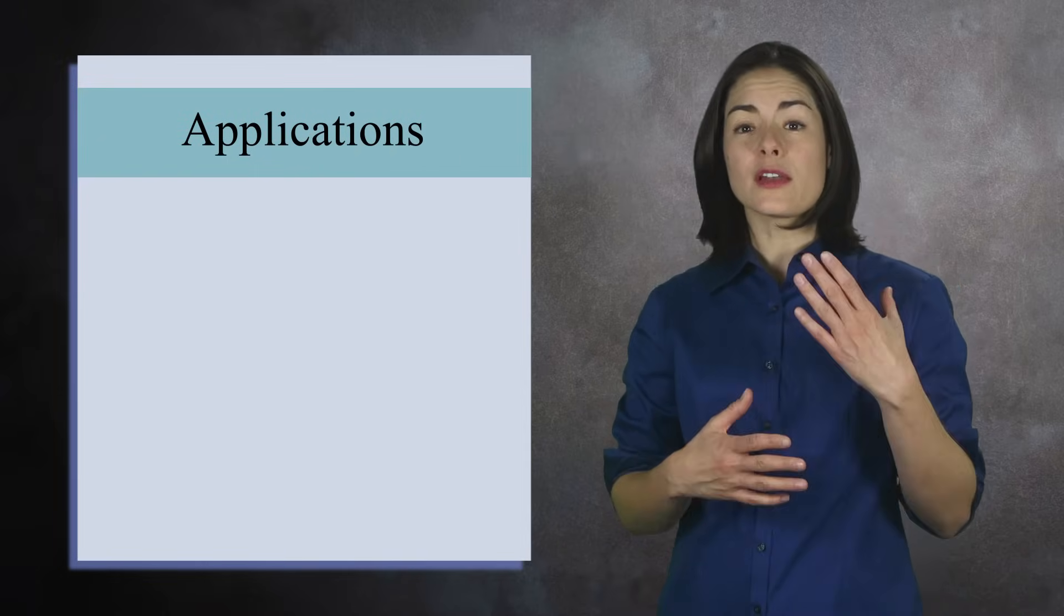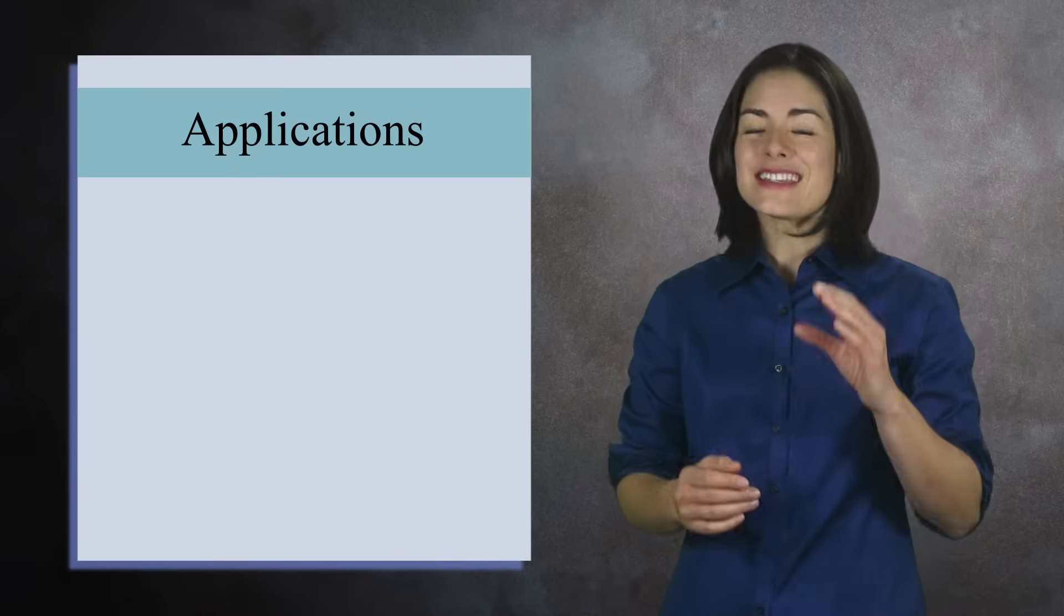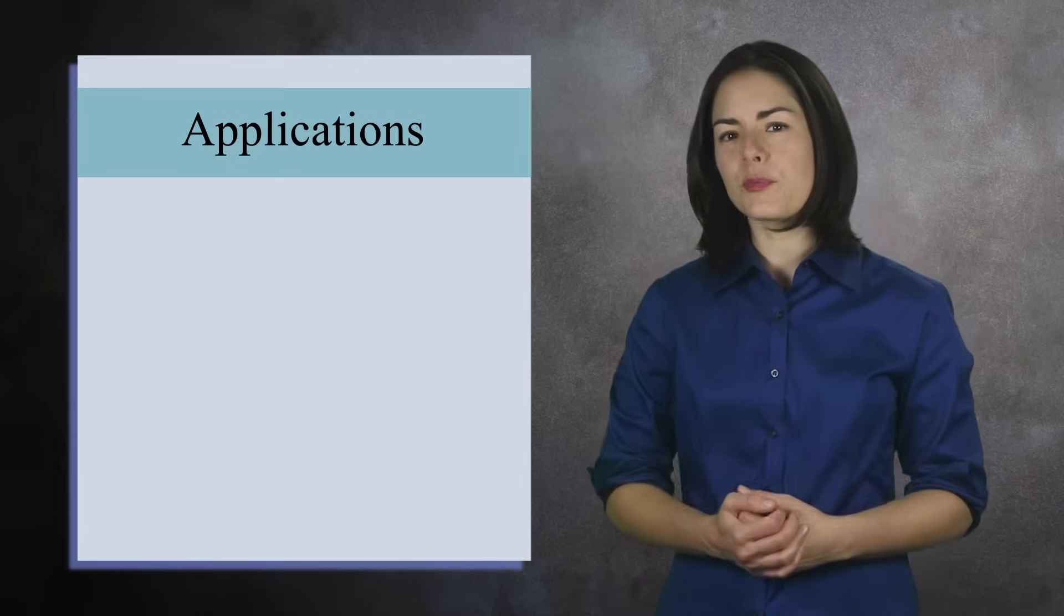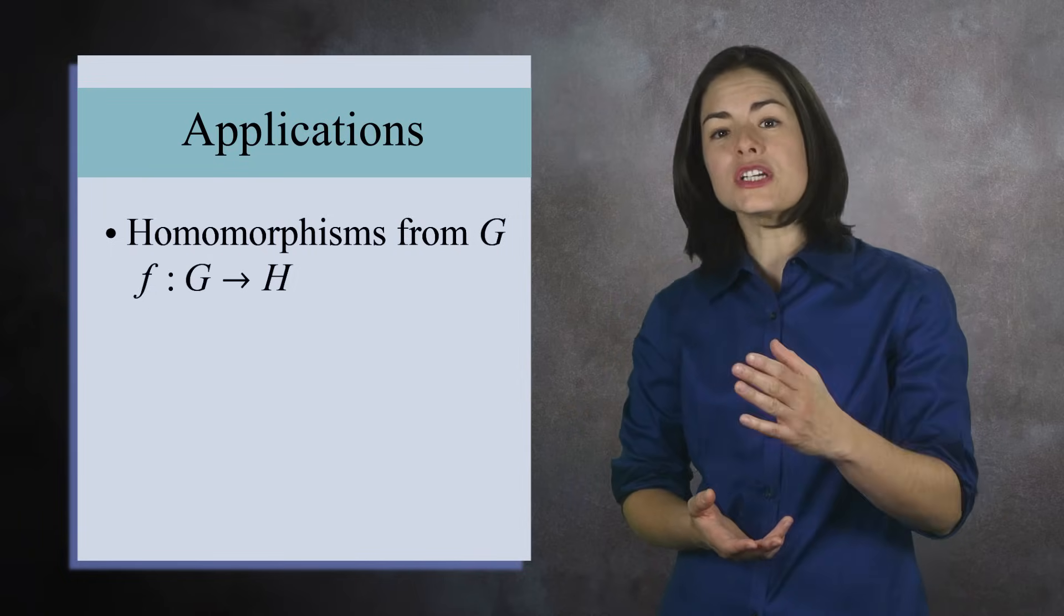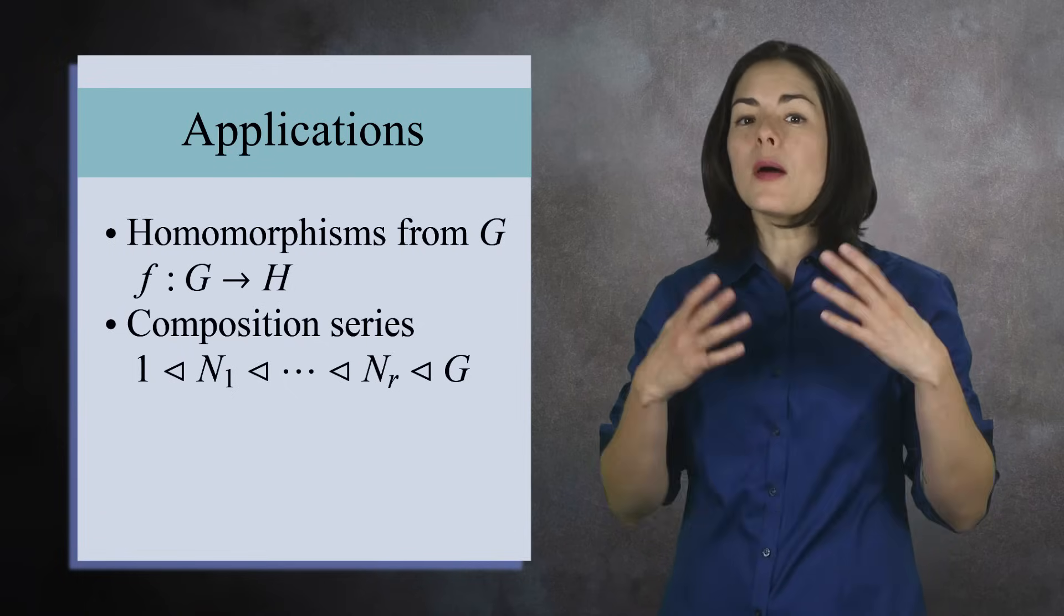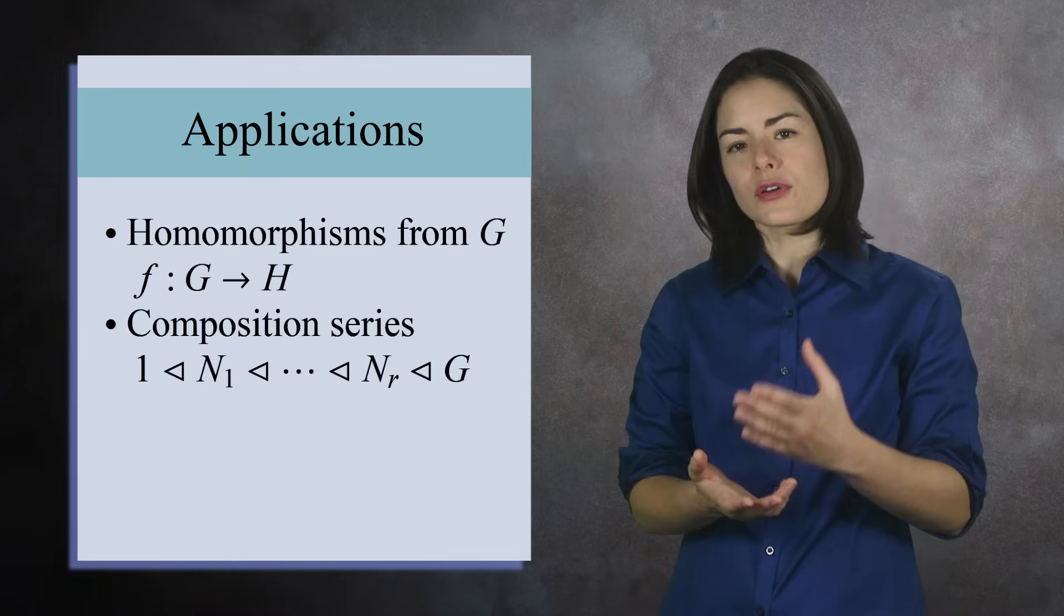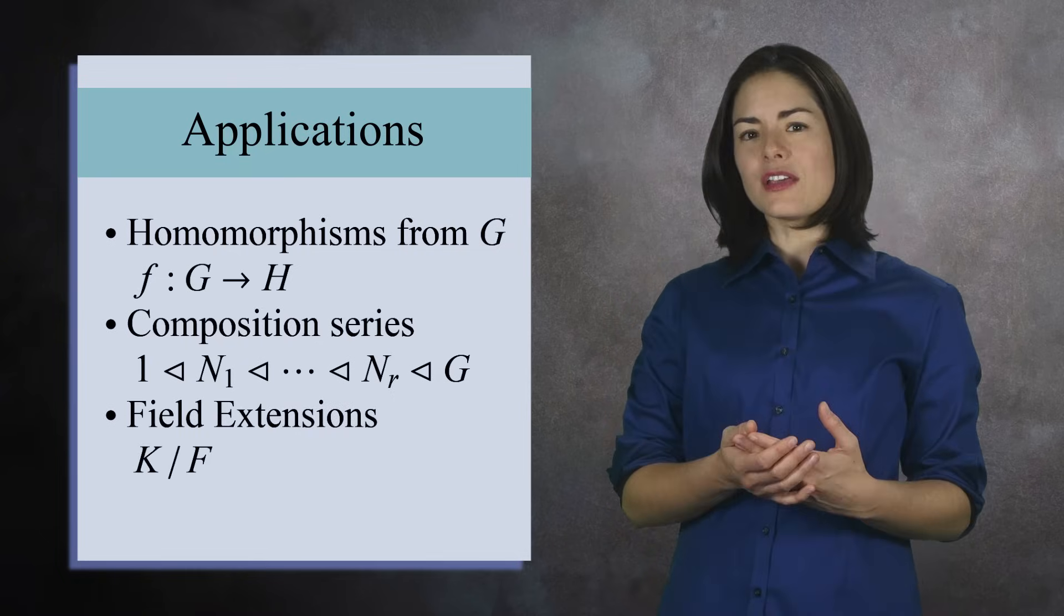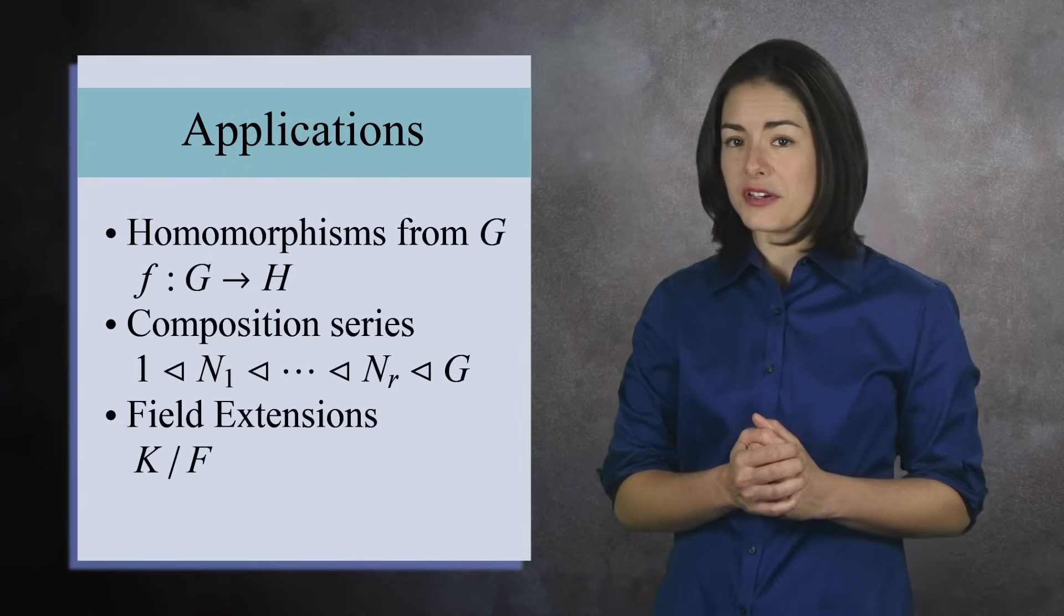Normal subgroups and quotient groups are among the most useful devices in abstract algebra. In separate videos, we'll show how normal subgroups determine what kinds of homomorphisms are possible from a group G to other groups. And for finite groups, you can find a chain of normal subgroups called a composition series, which acts as a kind of prime factorization of the group. Normal subgroups can even be used to study fields. You'll learn about this technique in Galois theory.